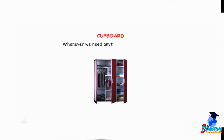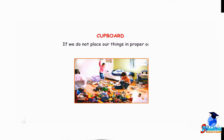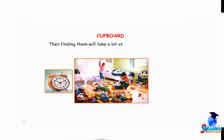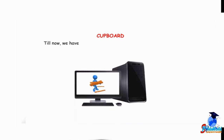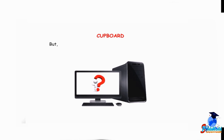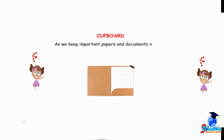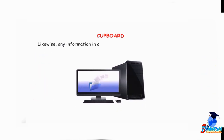Whenever we need anything from a cupboard, we can find it at the right place and use it quickly. If we do not place our things in proper order, then finding them will take a lot of time and create chaos. A computer can store large amounts of information, but do you know how this data gets stored in a computer?